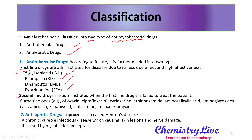Second-line drugs are administered when the first-line drugs have failed to treat the patient. Examples include fluoroquinolones, cycloserine, ethionamide, aminosalicylic acid, aminoglycosides, clofazimine, and capreomycin. These drugs are useful as second-line agents.